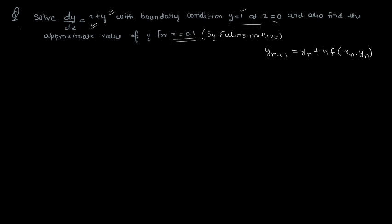You might be wondering what h is. Basically, h is called the step size. If you have to find out values of y for x = 1, 2, 3, 4, 5, the regular difference between every step is the step size — in this case, 1. So here, since x equals 0.1, the step size will relate to that range.